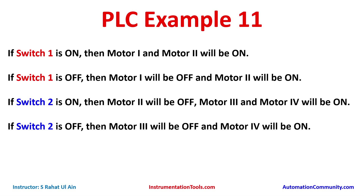When Switch 1 is turned on two motors get on, and when it is turned off one motor gets off but another motor still remains on. Similarly, when Switch 2 is turned on Motor 2 gets off but Motor 3 and Motor 4 turn on, and when Switch 2 is turned off Motor 3 gets off but Motor 4 still remains on. For Motor 2 and Motor 4 we will use set coils, for Motor 2's off condition we will use reset coils, for Motor 1 and Motor 3 we will use simple coils, and for Switch 1 and Switch 2 we will use normally open contacts. Let's move to TIA Portal where we will draw a ladder diagram for this example and also do the simulation.